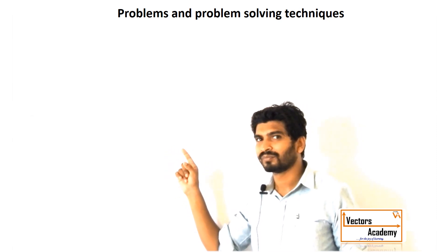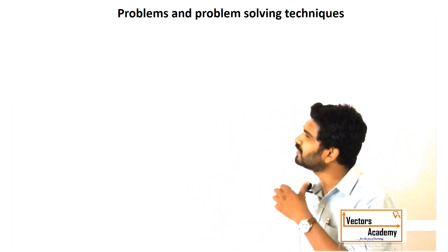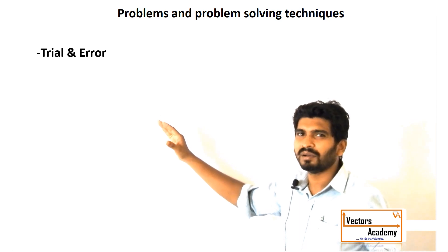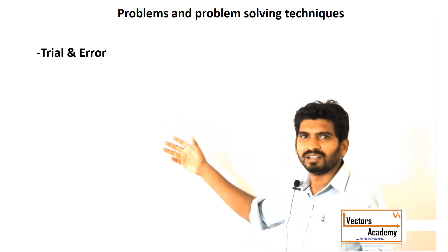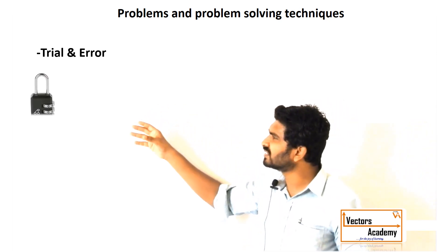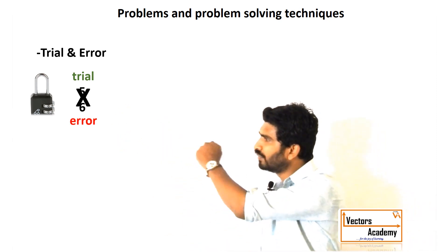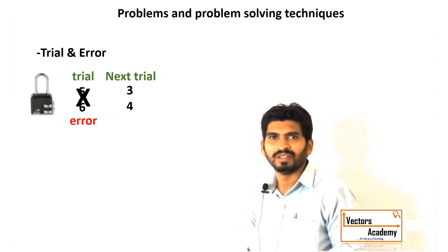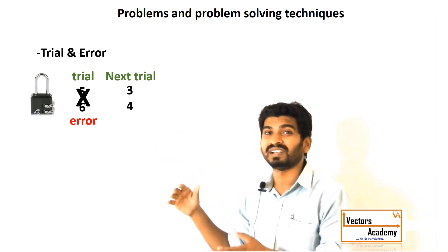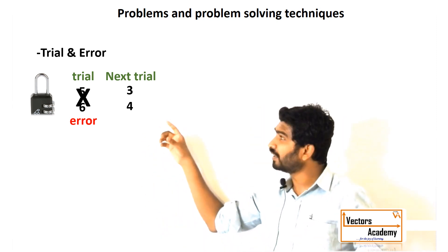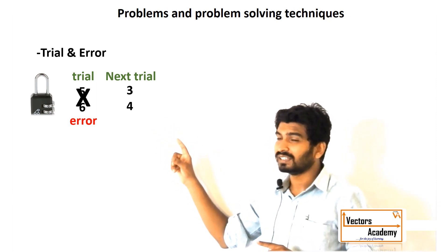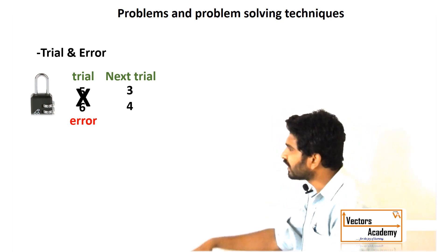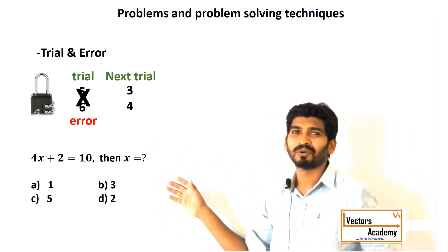The next technique is trial and error. It is similar to heuristics but here we randomly guess answers — for example, I randomly try 56 in the number lock; if it doesn't open, I strike it off and try the next number. Trial and error is most useful when we have a limited number of options.